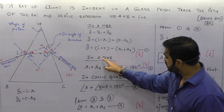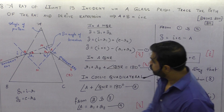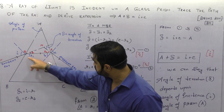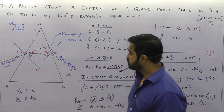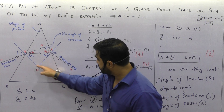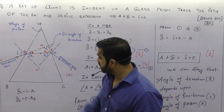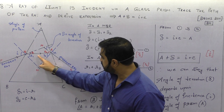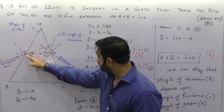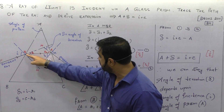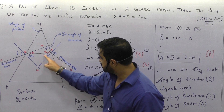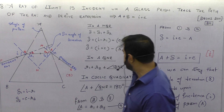In triangle QNR, which is the lower triangle, the angles in a triangle add up to 180 degrees. So r1 plus r2 plus angle QNR equals 180 degrees.